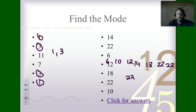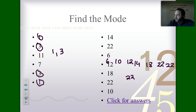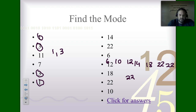To summarize finding the mode: you're looking for the popular number. Order them from smallest to largest and look for the most popular number. If every number appears only once and no number is more popular than the others, then the mode is no mode — never write zero, you write no mode.